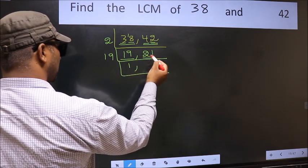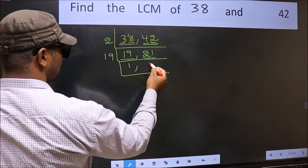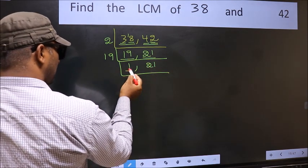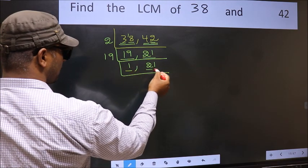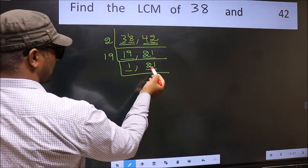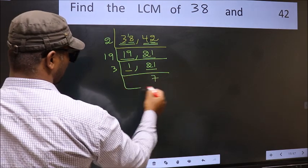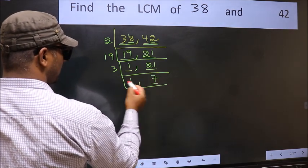The other number 21 is not divisible by 19, so we write it down as it is. Now we got 1 here, so focus on the other number 21. 21 is 3×7=21.